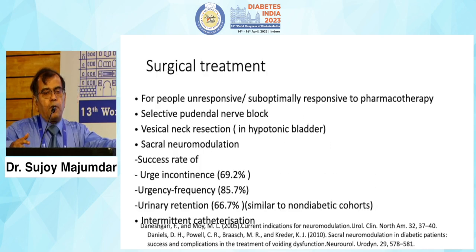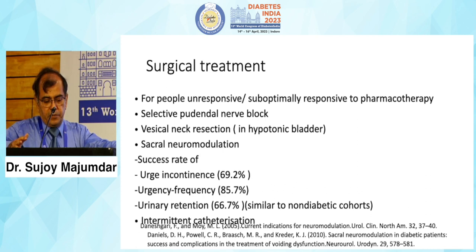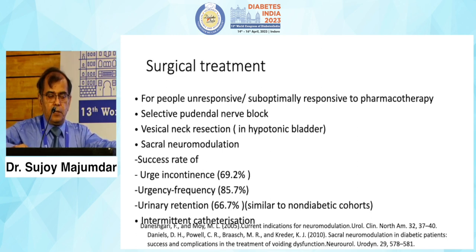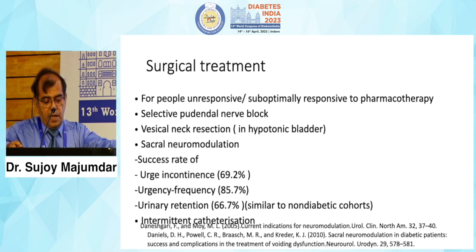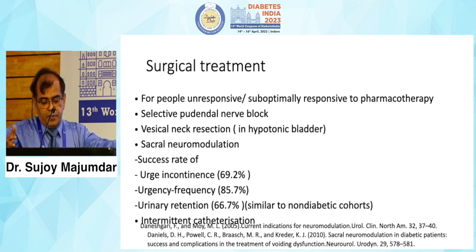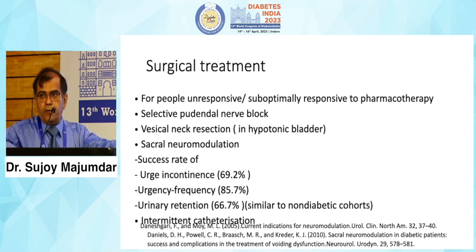Surgical treatment is for patients where no medical treatment works, and outcomes are not really that great. Options include selective pudendal nerve blocks and Y-V plasty resection in hypotonic bladder. The one showing really good promise is sacral neuromodulation — sacral nerve stimulation through external devices — with significant success rates: reducing urge incontinence by nearly 70 percent, urge and frequency by nearly 86 percent, and urinary retention by around 67 percent. Intermittent catheterization is also tried but is fraught with problems such as recurrent urinary tract infection.